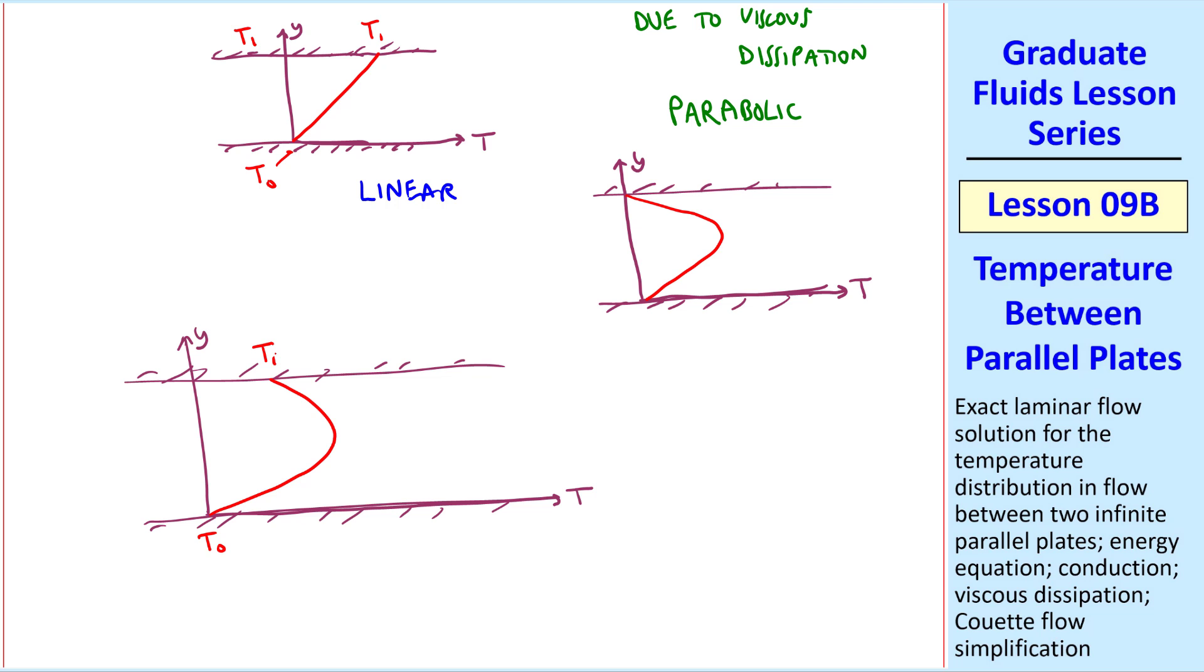t0 at the lower wall, t1 at the top wall, and a combination of this profile and this one, ending up like this. This part is due to conduction, and this part is due to viscous dissipation.